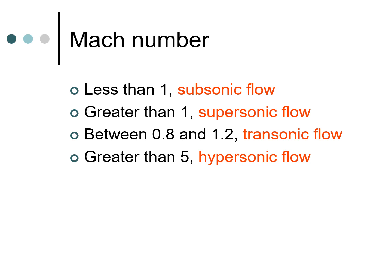The classifications are as follows: if Mach number is less than 1 we have subsonic flow. If it is greater than 1 we have supersonic flow. If it is between 0.8 to 1.2 we have transonic flow, and if it is greater than 5 we have hypersonic flow.